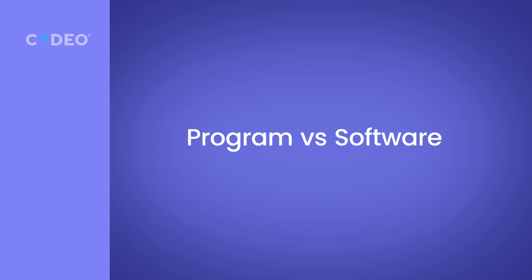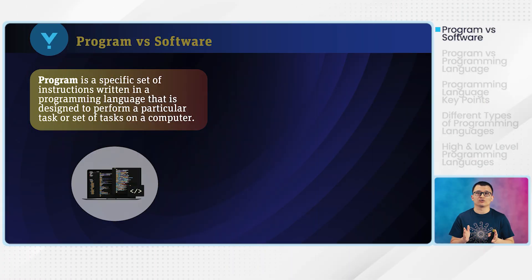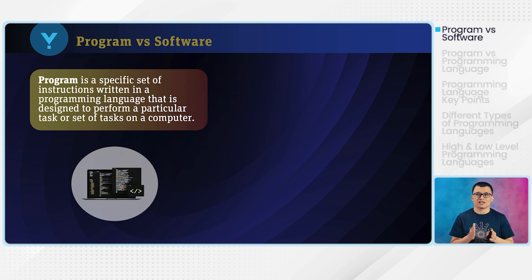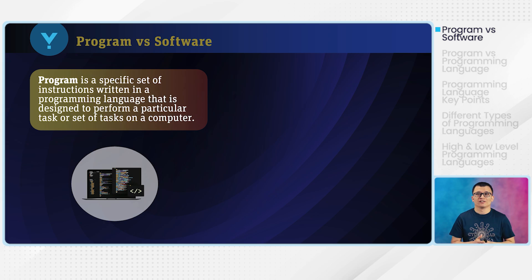First of all, you need to know the difference between a program and a software. They are correlated to each other, so please do not mix them up. A program is basically a set of instructions, and it is written in a programming language — a set of code, basically. And this set of code is designed to perform a particular task.